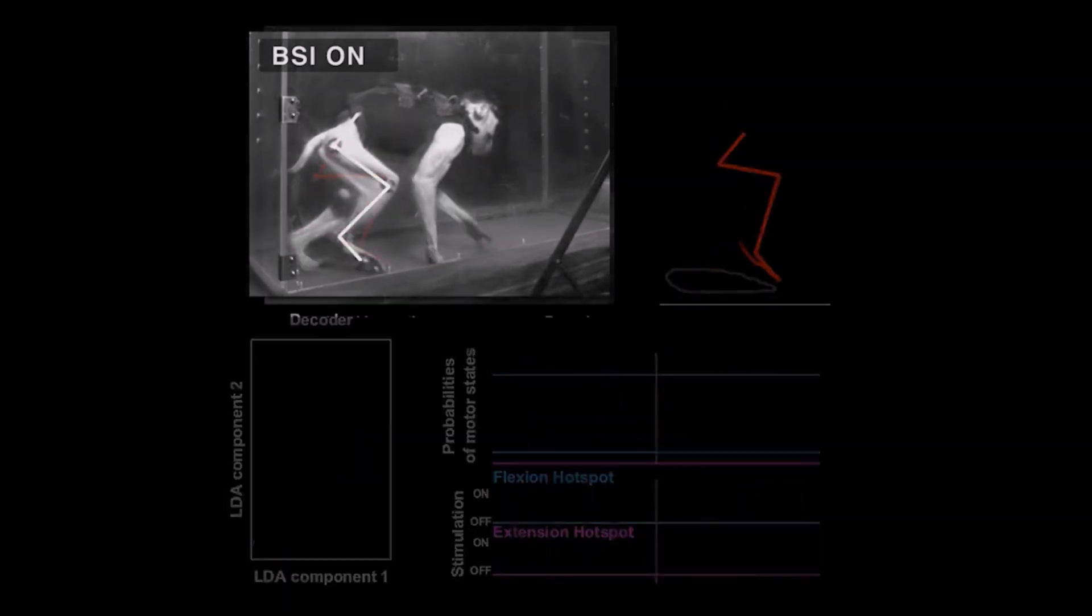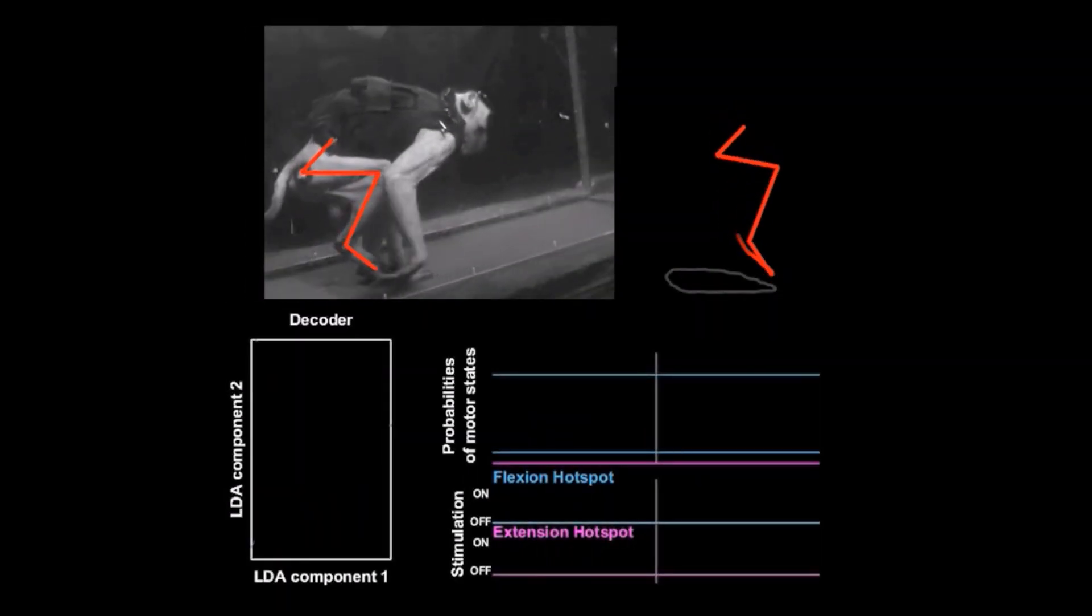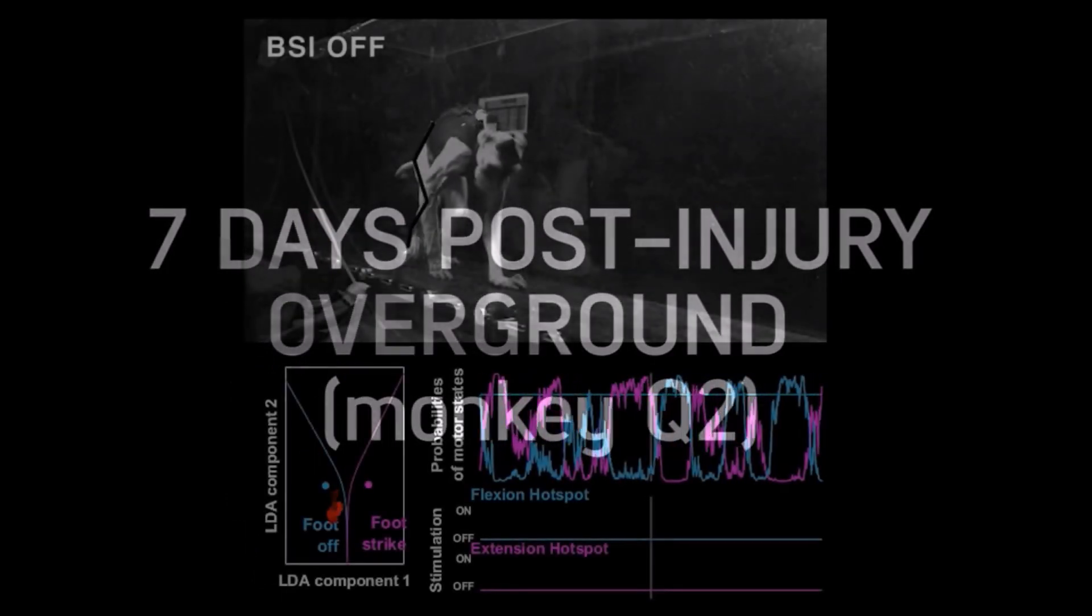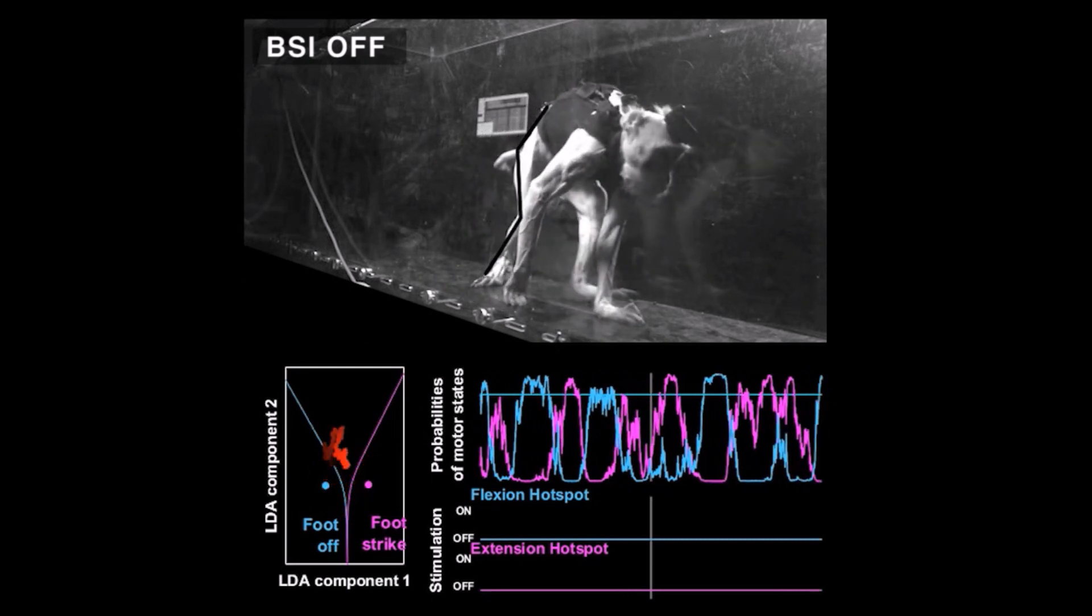In contrast, continuous stimulation blocked the leg in flexion. The same functional improvements were observed when the monkeys progressed freely over ground.